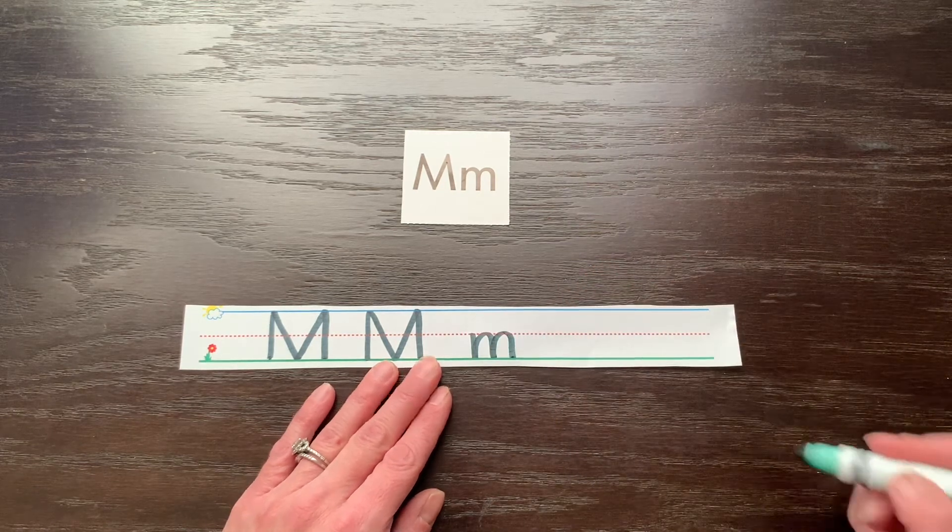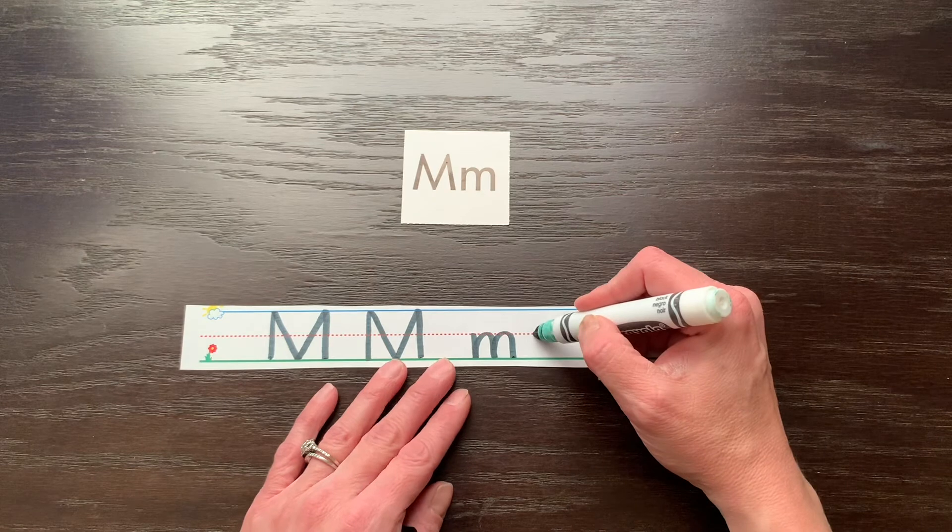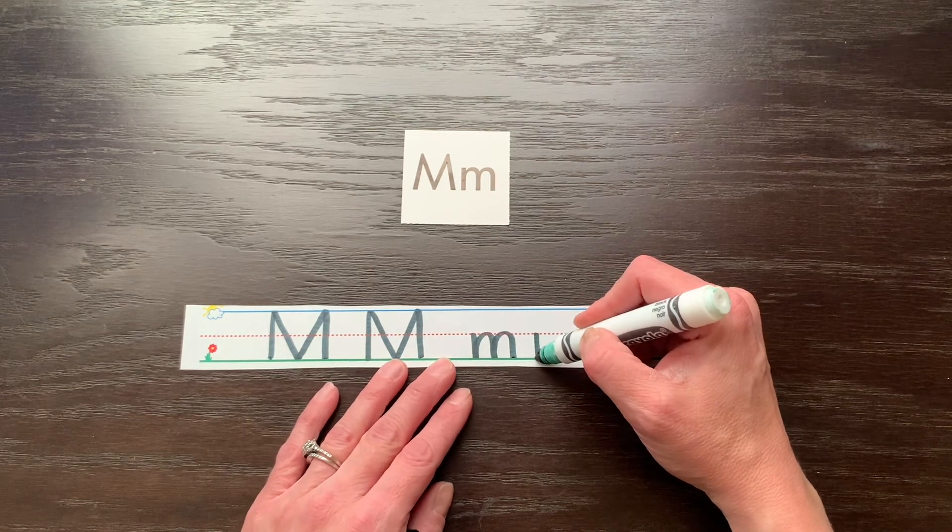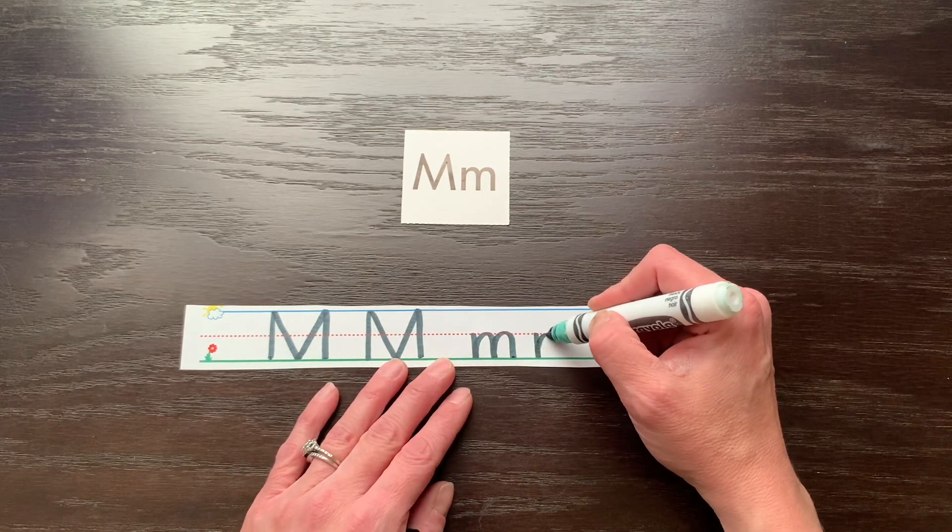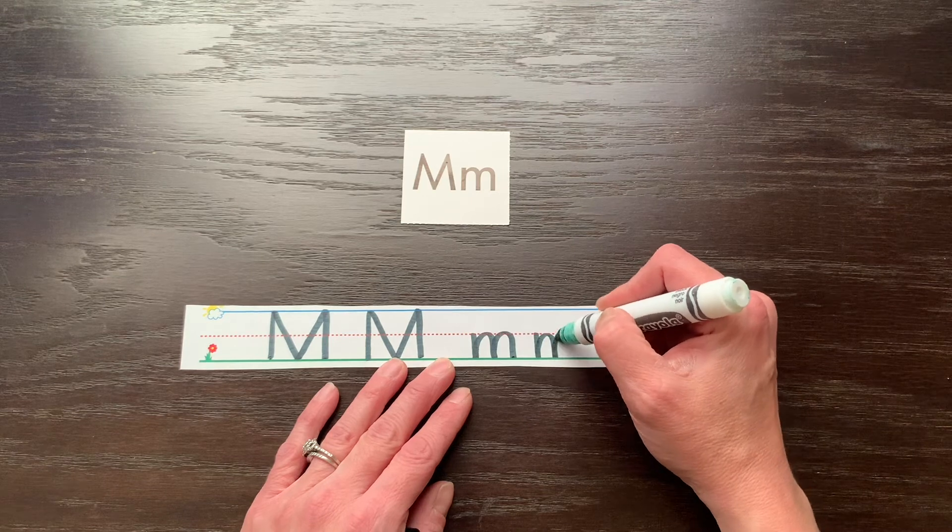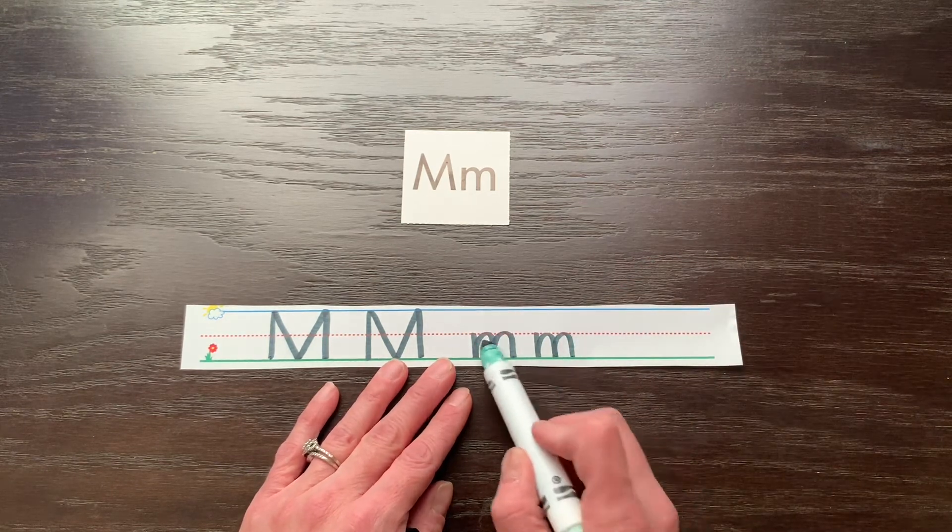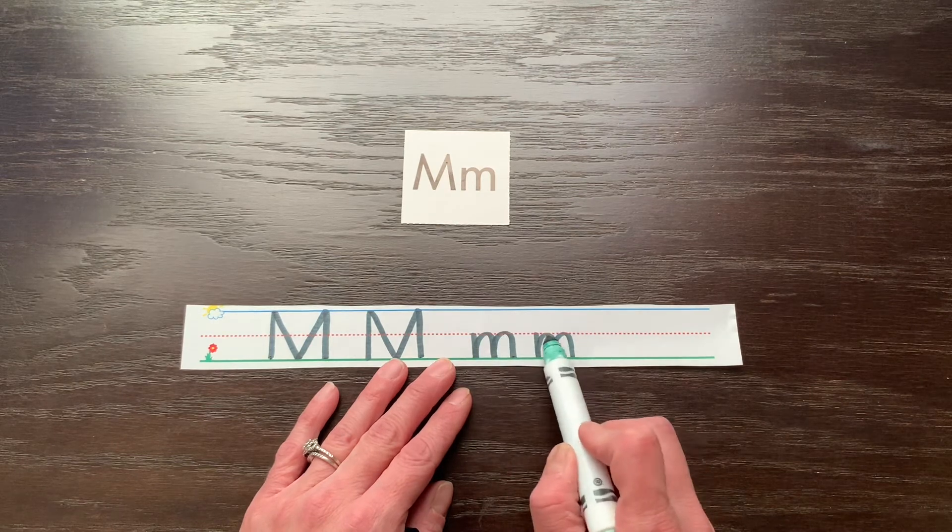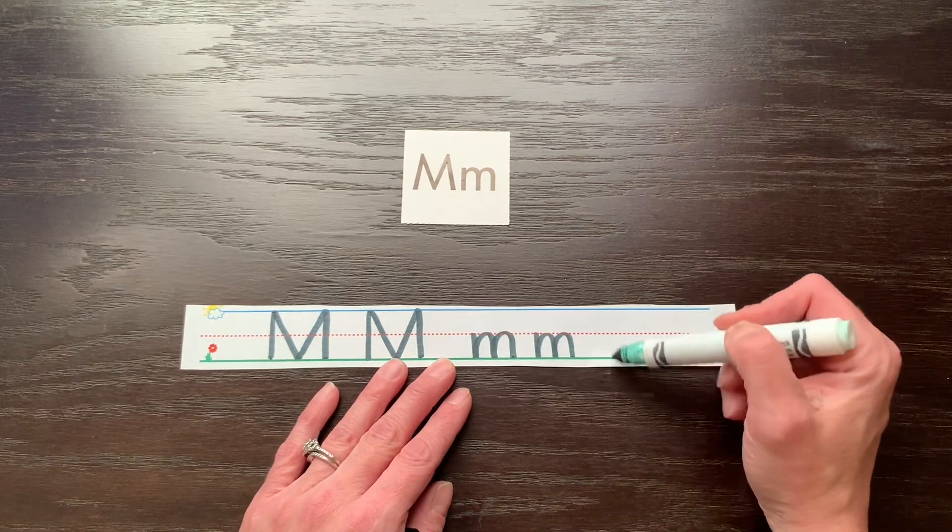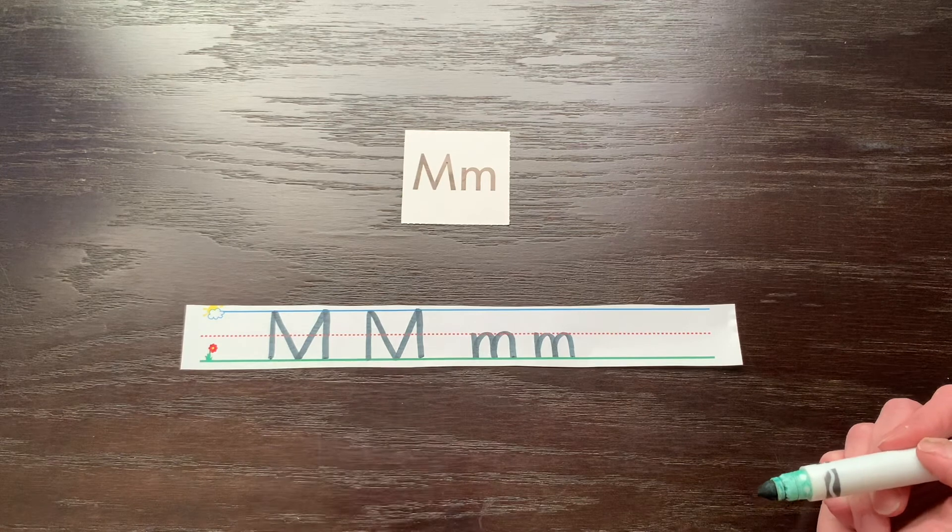Let me show you that one more time. Start in the middle. Go straight down to the ground. Ride the elevator up and bump. Ride the elevator up and bump. It's very important that your bumps go all the way up to the dotted line but not above them or below them because then that's not quite right.